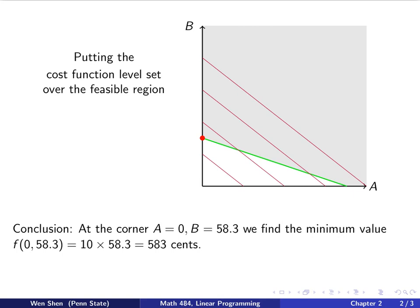Now we can have our conclusion. We know now that at this corner point with the coordinate A equals 0, B equals 58.3, which we computed earlier, that is the minimum point where the cost function has the minimum value. To find this minimum value, all we need to do is put the coordinate into the cost function and do the computation.